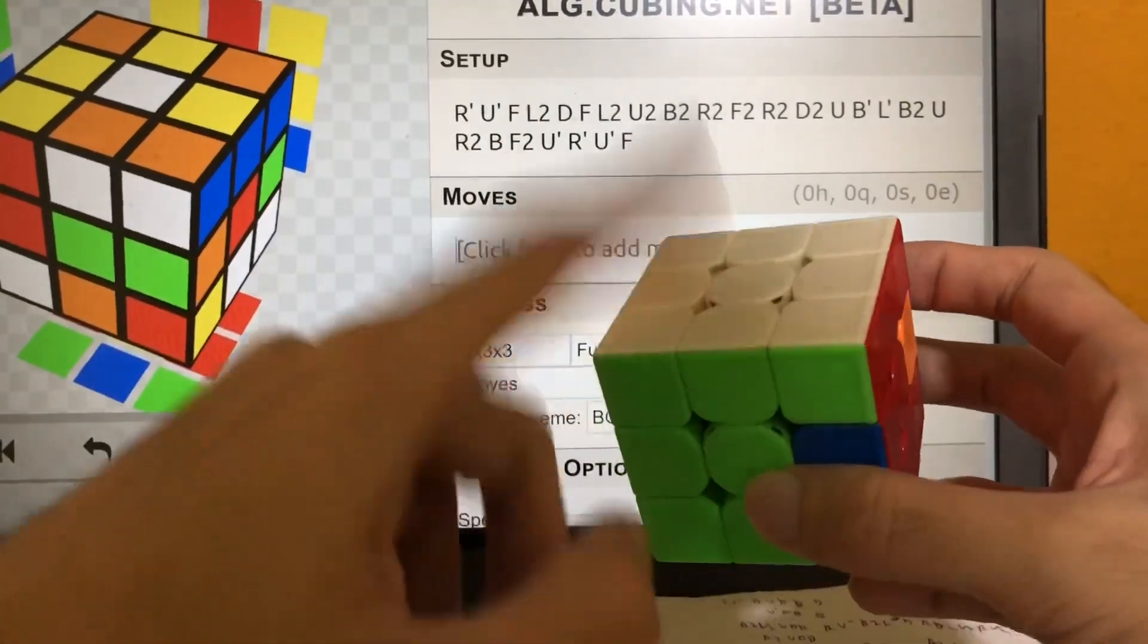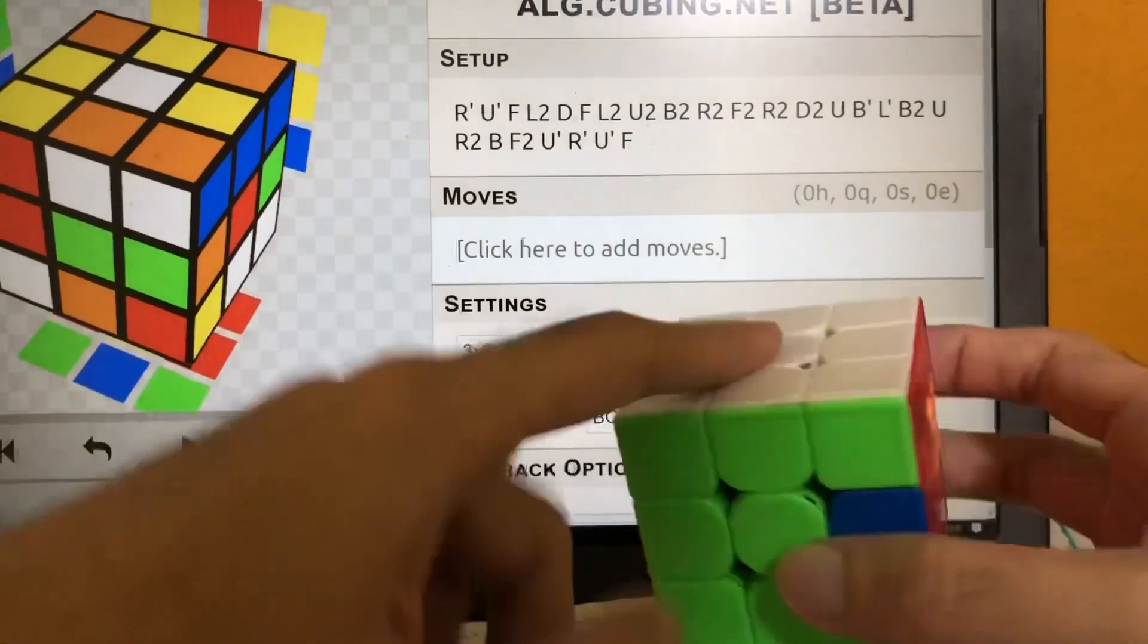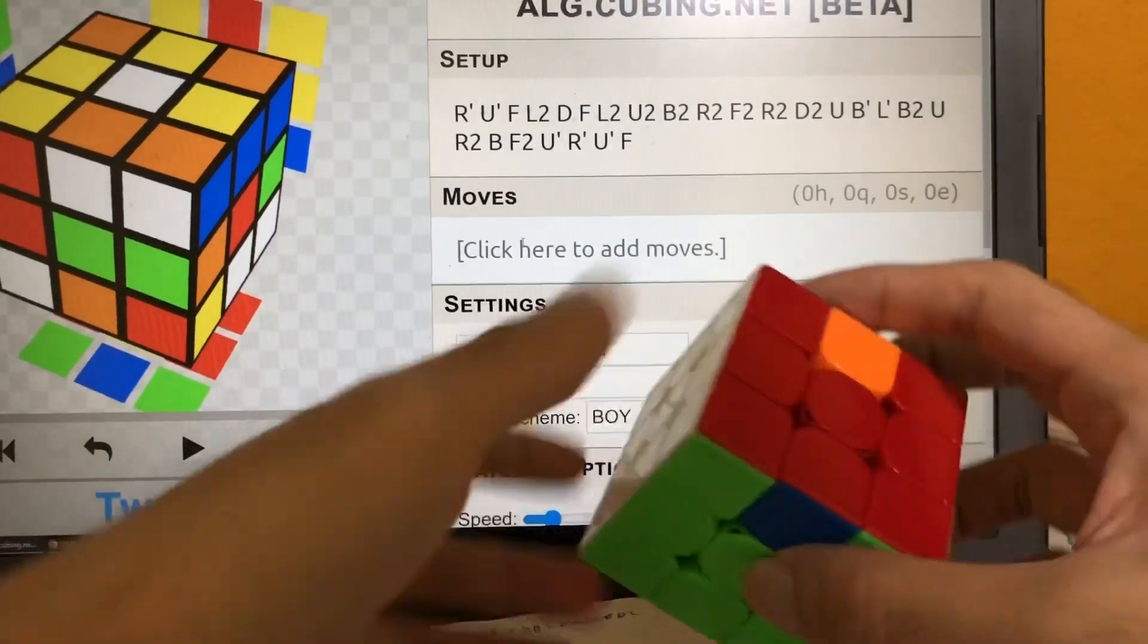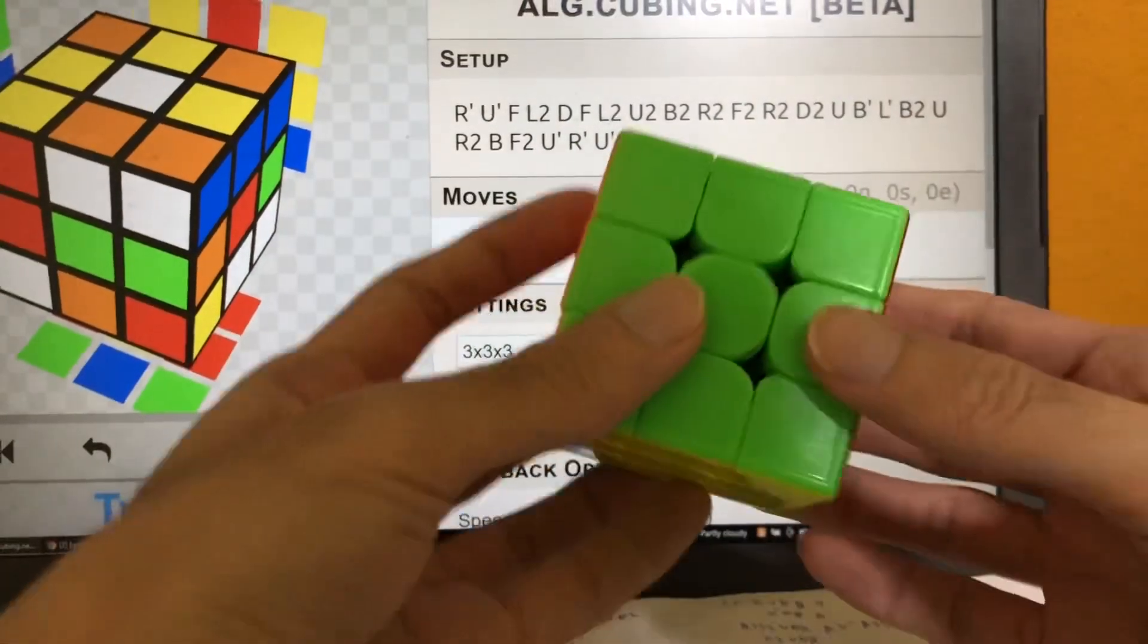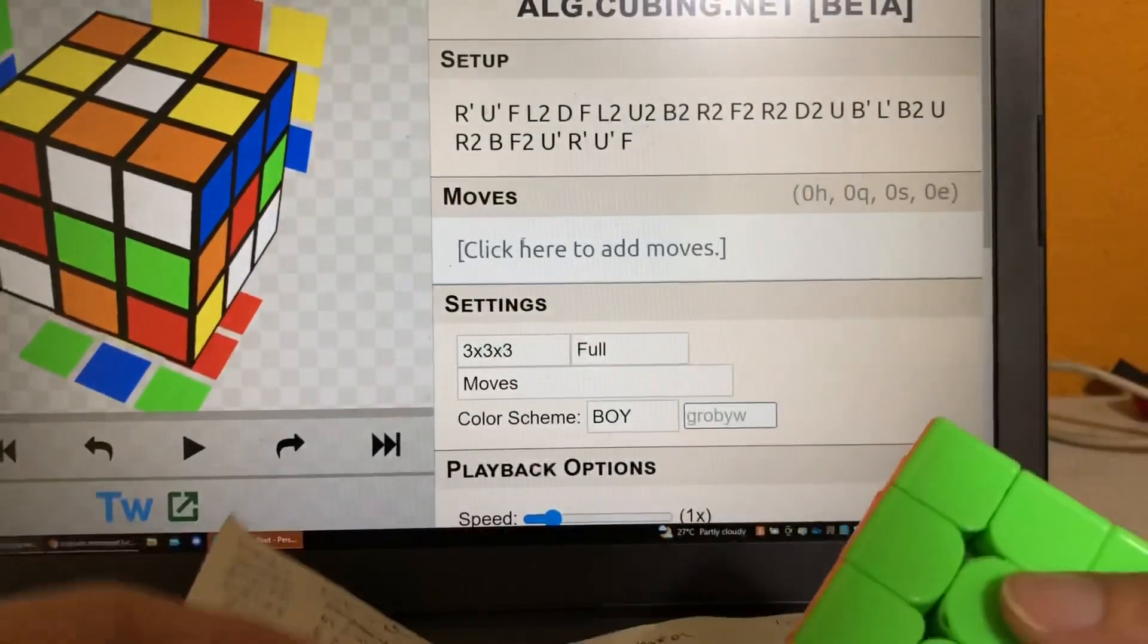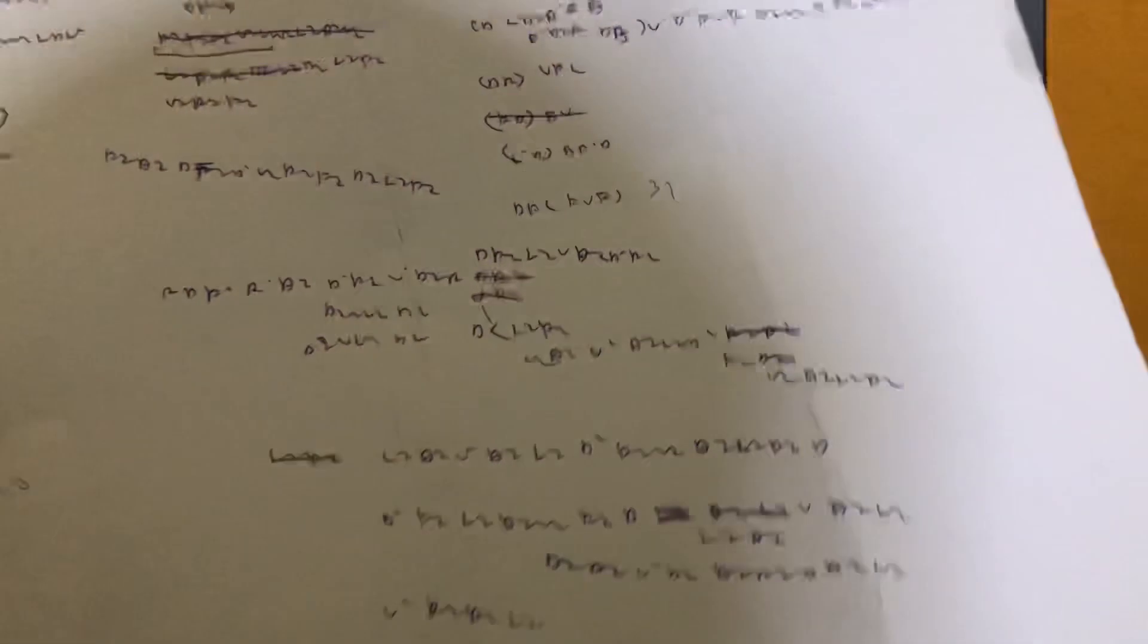At this point, I kind of hoped that this would solve in 0, which would give me ASR, but unfortunately, it didn't. The slice solved in 1, so that was 23.